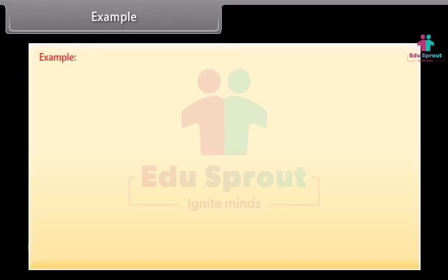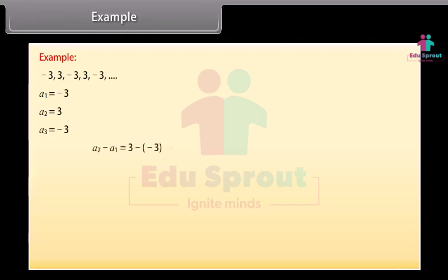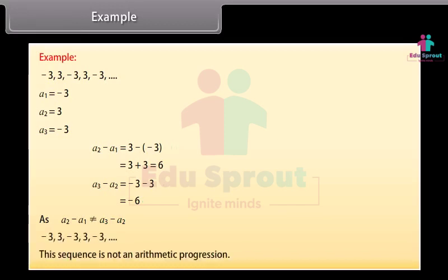Let us now solve some examples. Observe this sequence. We will find out whether these numbers form AP or not. Here A1 is minus 3, A2 is 3, A3 is minus 3 and so on. Now A2 minus A1 is equal to 3 minus (minus 3) which is equal to 6. Also, A3 minus A2 is equal to minus 3 minus 3 which is minus 6. As A2 minus A1 is not equal to A3 minus A2, the given sequence is not an arithmetic progression.